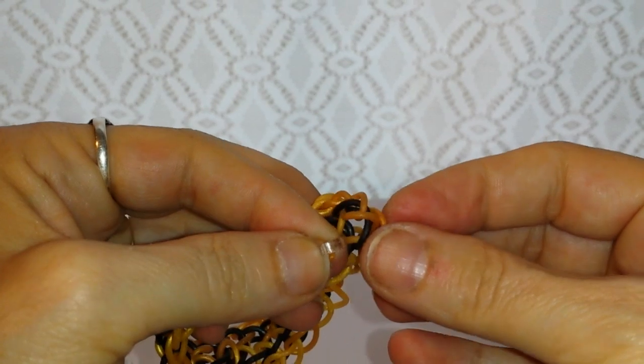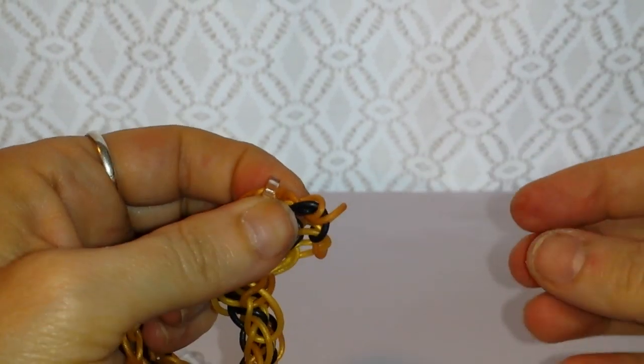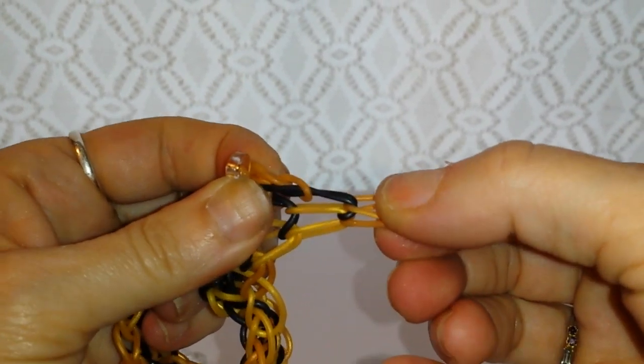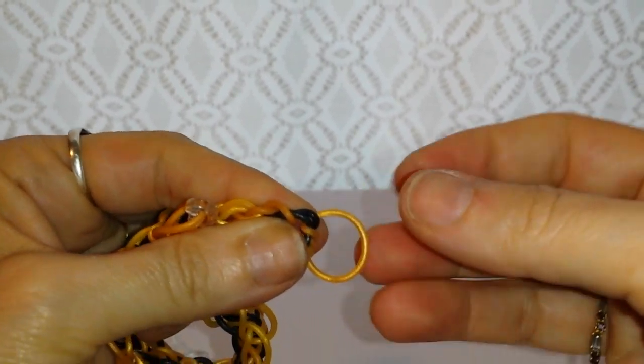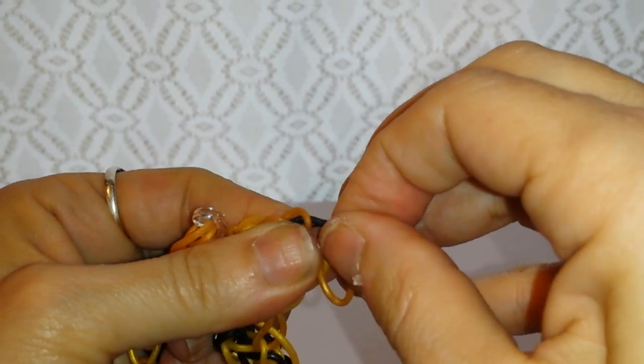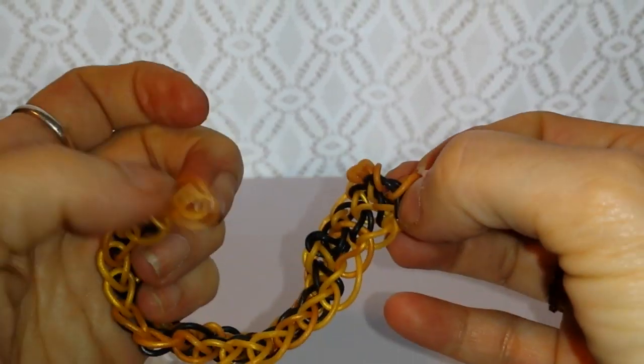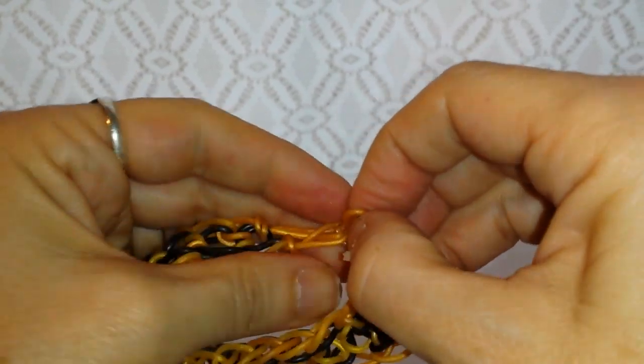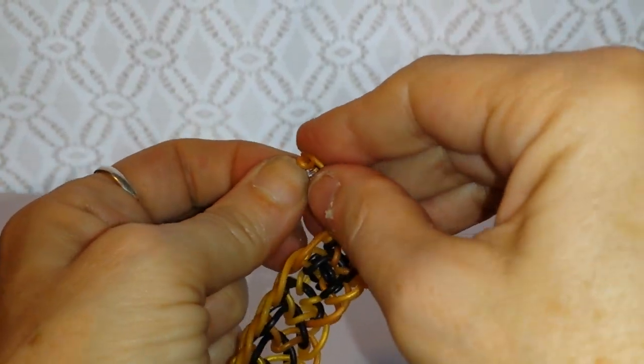Put it through those two bands, and on this side these bands are like little X's because we twisted them. So I'm going to grab one of the little X's and I'm going to put it through the C clip. Push both pieces that little X through here.